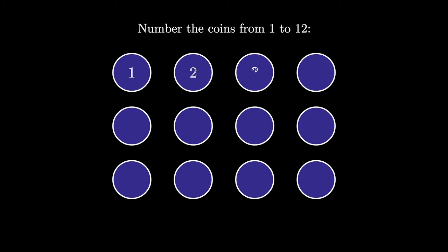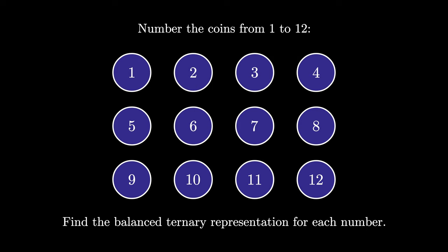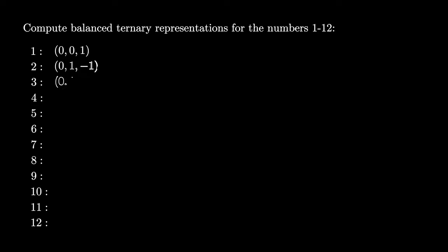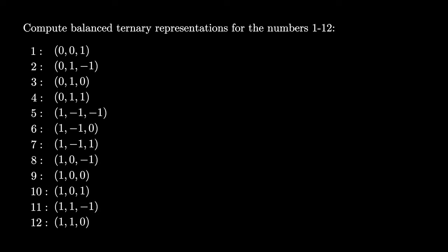Now let's see how to solve the coin weighing problem. We start with our 12 coins, giving each a number from 1 to 12. We then find the balanced ternary representations of each number from 1 to 12. These 12 representations can be computed by hand, and we pad zeros at the beginning of the first few numbers so that every number has a balanced ternary representation with exactly three digits.